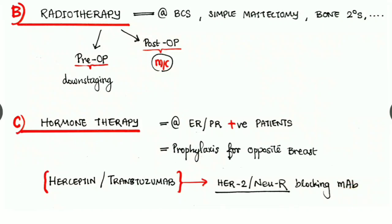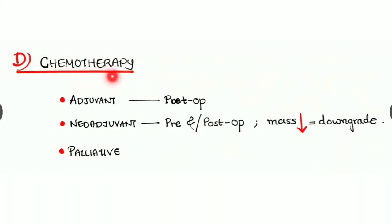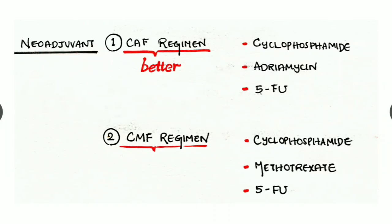Next is the most important chemotherapy. It can be adjuvant chemotherapy, neoadjuvant chemotherapy, and palliative chemotherapy. Adjuvant chemotherapy is a postoperative chemotherapy, whereas neoadjuvant chemotherapy can be pre- and/or postoperatively used and it reduces the mass and downgrades the lesion. Neoadjuvant chemotherapy - there are two regimens. The first one is the CAF regimen, which is the better one: C for cyclophosphamide, A for adriamycin, and F for 5-fluorouracil. And the second one, the CMF regimen: C for cyclophosphamide, M for methotrexate, and F for 5-fluorouracil.